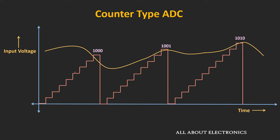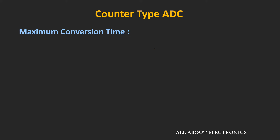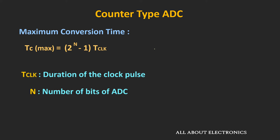As you can see, the output of the DAC increases until it is less than the input voltage. And once it crosses the input voltage, the counter is reset and the new conversion starts. This will be the total conversion time for one conversion. As the input signal increases, the conversion time will also increase. In the worst case, the maximum conversion time will be equal to 2 to the power n minus 1, times T_clock, where T_clock is the duration of the clock pulse and n is the number of bits of the ADC.